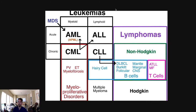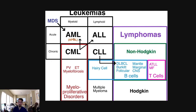So you have your leukemias and your lymphomas. On your leukemias, you have your myeloid and lymphoid lineages. So AML — what population gets AML? Adults, 80% or more are found in adults, while ALL, acute lymphoblastic leukemia, is found in the majority of children.